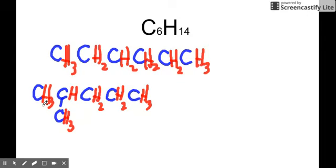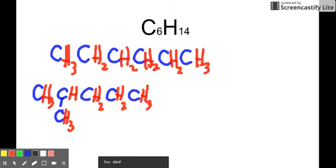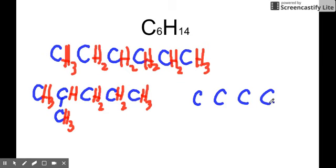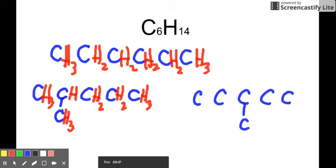The third one will be what if we'll move the branch because this is five. I can move it here, which is named differently. So I can draw it this way. I can have C, C, C, C, and then C, and then I'll have another C here. That way, I can now put my Hs.